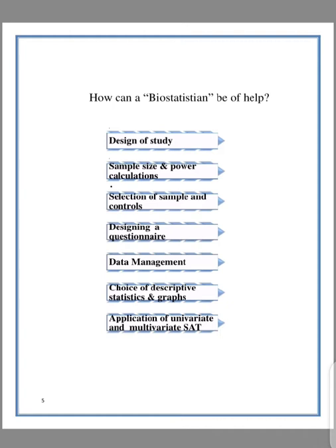You have to know the samples you are going to collect, because a certain number of samples can basically give you a wrong conclusion. How do you select the samples, and how do you select the controls within the samples? Because most especially when you're doing experimentation, you can't get samples without controls, and you have to decide which is a sample and which is a control, in order to avoid bias. Then designing a questionnaire — you don't just design a questionnaire without input from a statistician. Then how do you manage the data after collecting it? The choice of descriptive statistics and graphs to be used, and the application of univariate analysis — when you're dealing with one variable — or multivariate analysis, when dealing with more than one variable. These are all statistical analysis techniques.